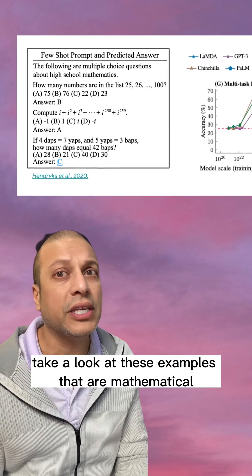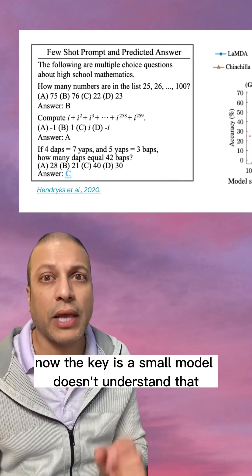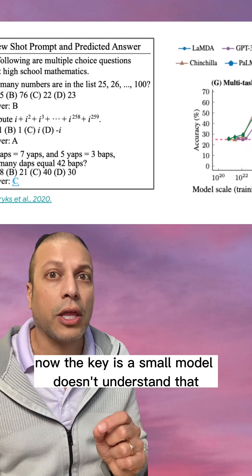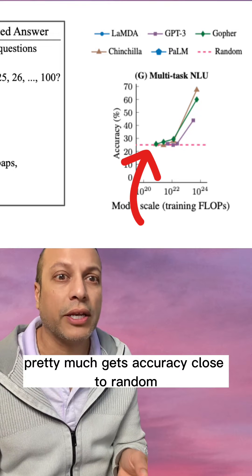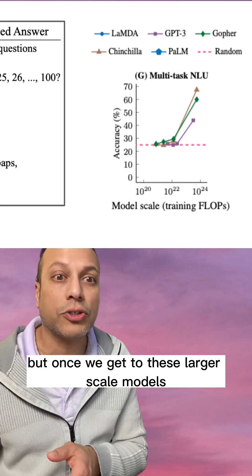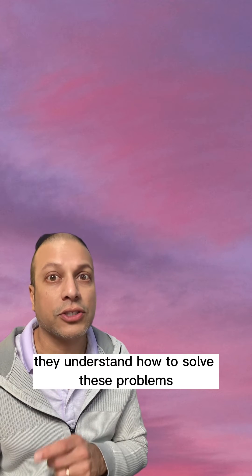For example, take a look at these examples that are mathematical that a model is able to learn. Now, the key is, a small model doesn't understand that. It pretty much gets accuracy close to random. But once we get to these larger scale models, take a look at the performance. They understand how to solve these problems.